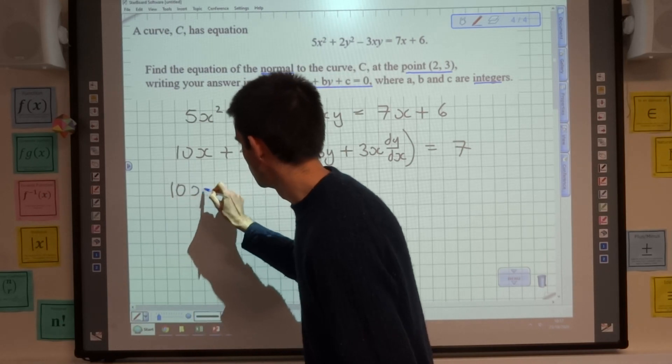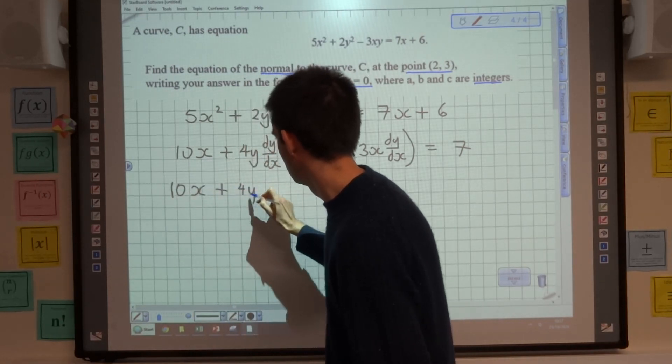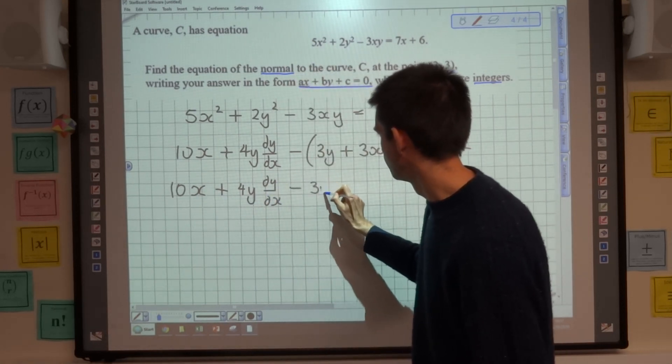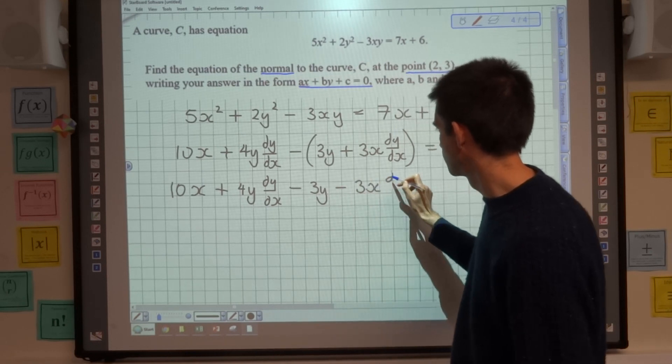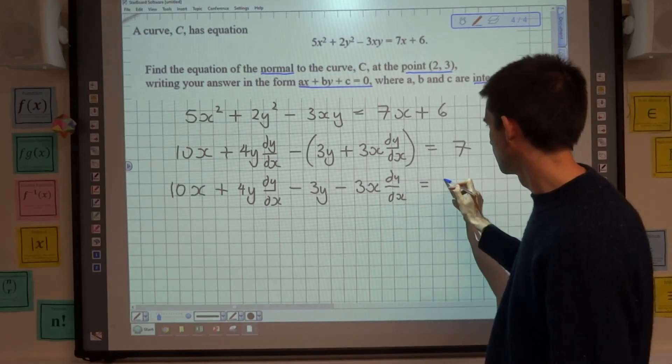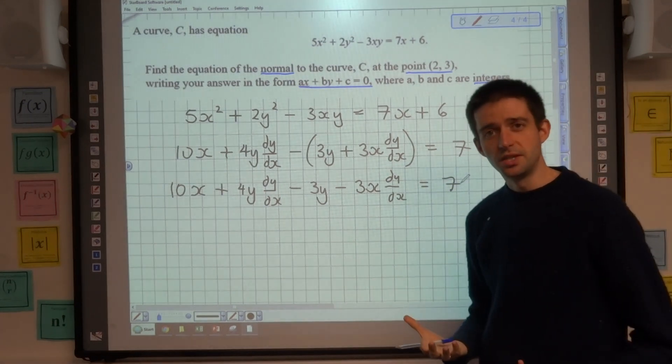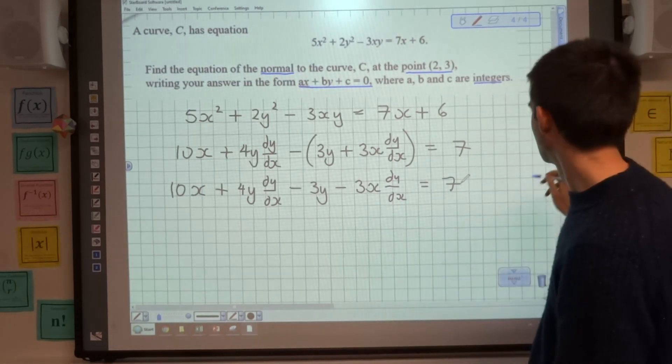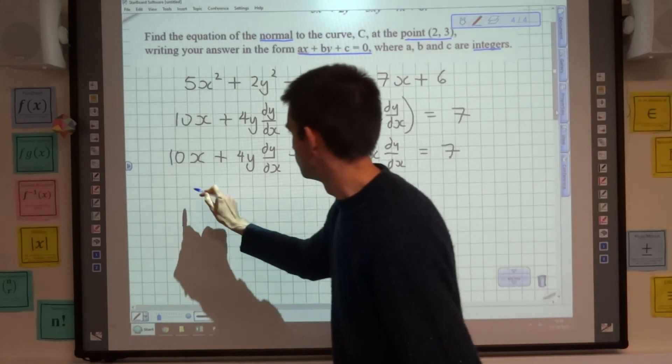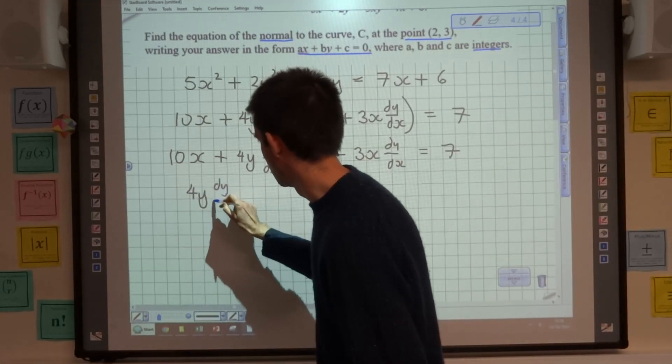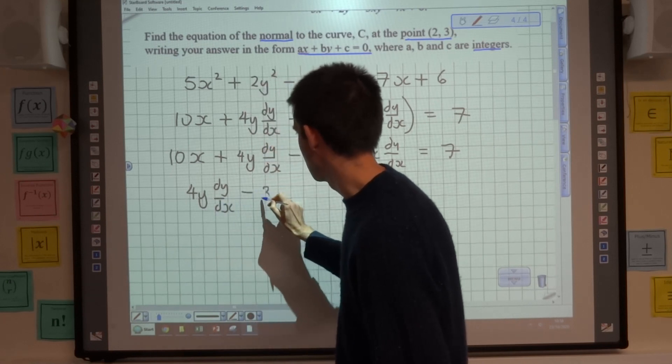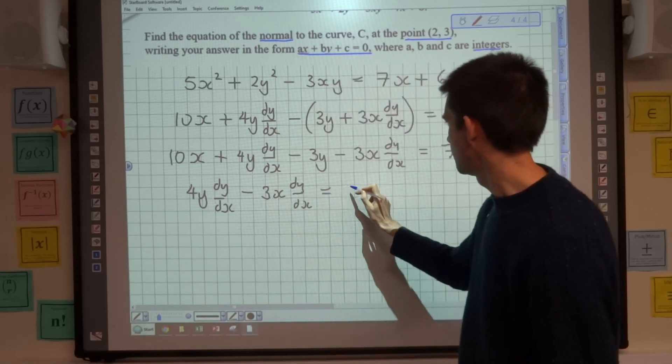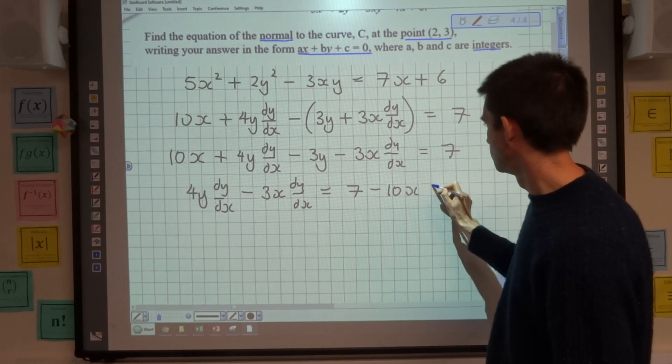Tidying this up, because I'm subtracting those two terms, we've got 10x + 4y dy/dx - 3y - 3x dy/dx = 7. And I'm going to look to make dy/dx the subject of this, so that I can evaluate the gradient of the curve at the point I've been given.